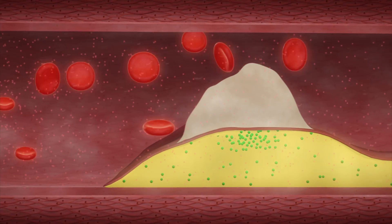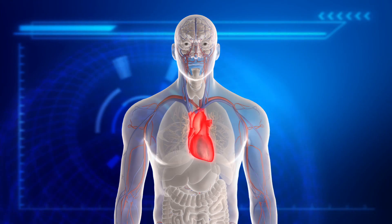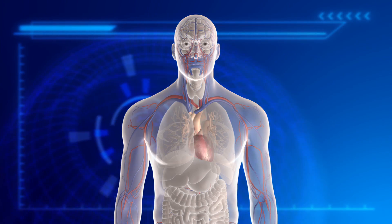A thrombocyte formed on the surface of a rupture can block blood flow to the heart or brain, which can result in a heart attack or ischemic stroke.